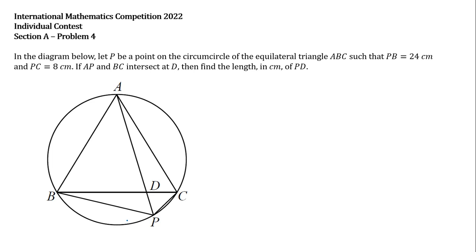Let us consider this problem from the International Mathematics Competition 2022. In the diagram below, let P be a point on the circumcircle of the equilateral triangle ABC such that PB equals 24 cm and